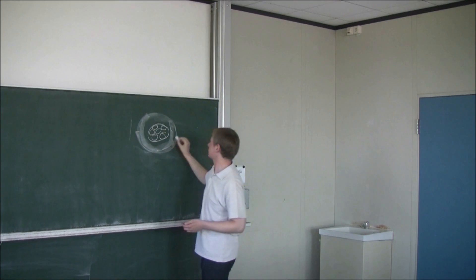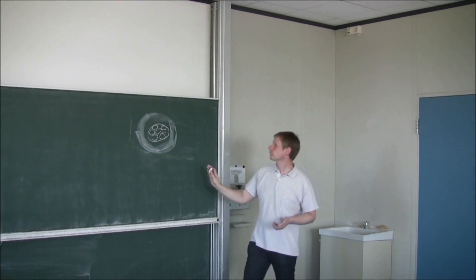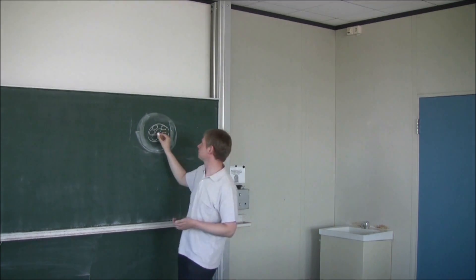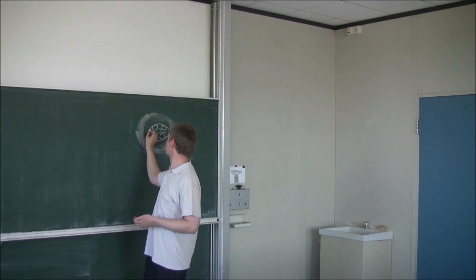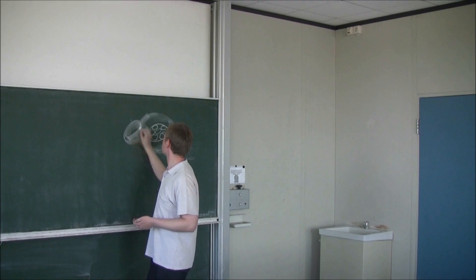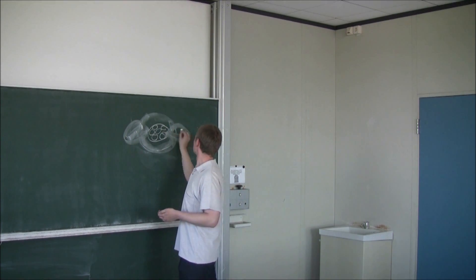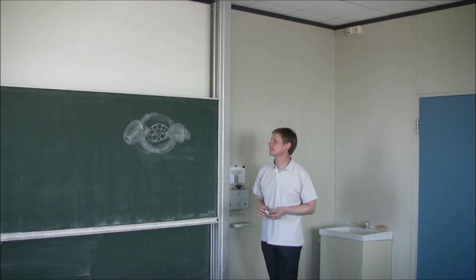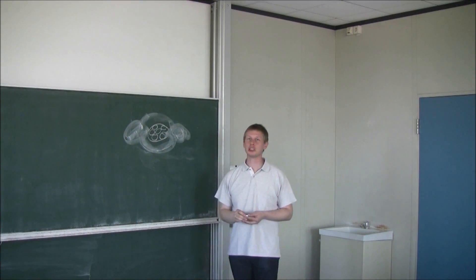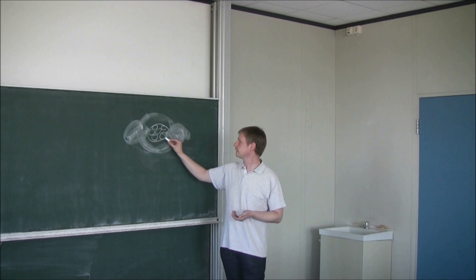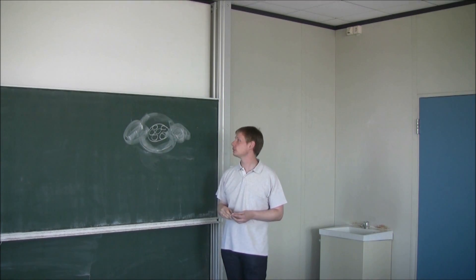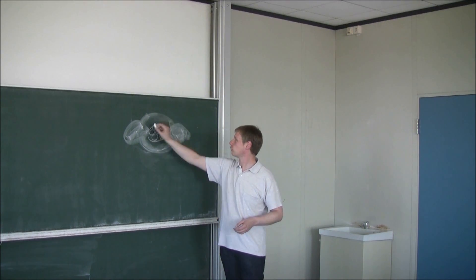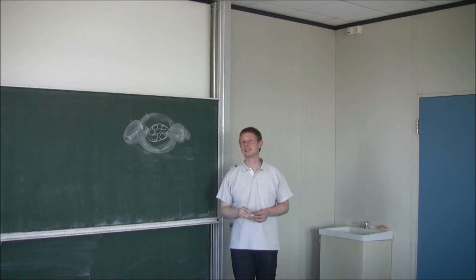Sie befinden sich in Orbitalen, wo sie sich aufhalten, die so aussehen können – und auch so. Das ist jetzt noch nicht maßstabsgerecht gezeichnet. Würde man das wirklich maßstabsgerecht versuchen und hätte zum Beispiel der Atomkern die Größe eines Knopfes, dann wäre die Größe dieser Orbitale in etwa der Karlsruher Zirkel.